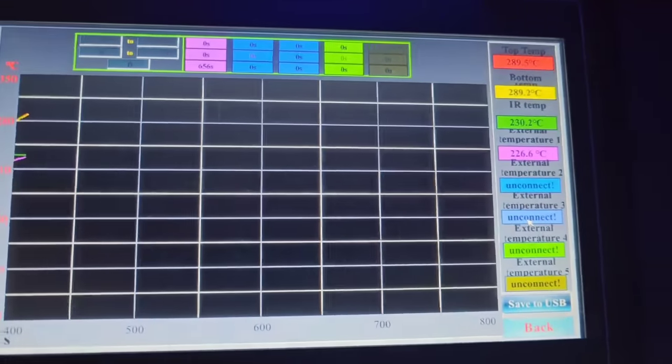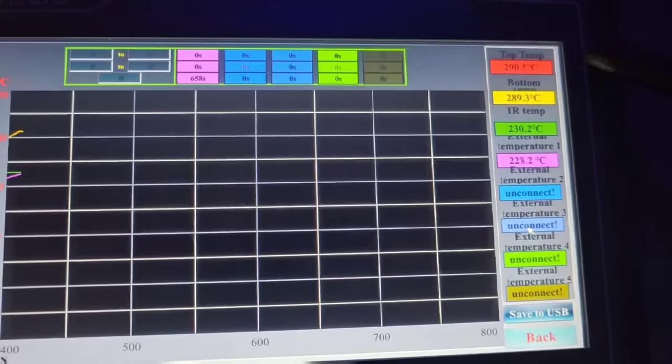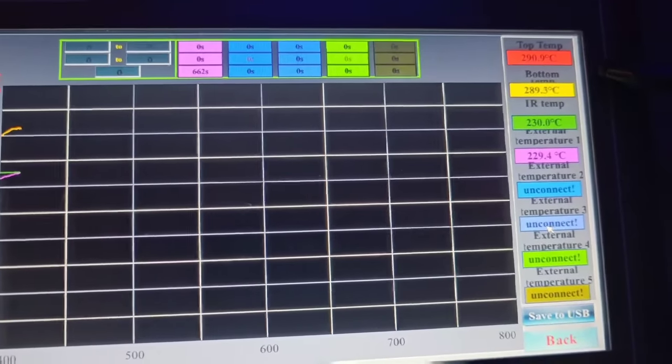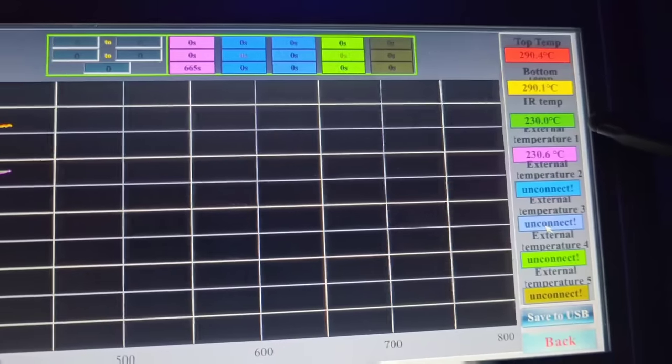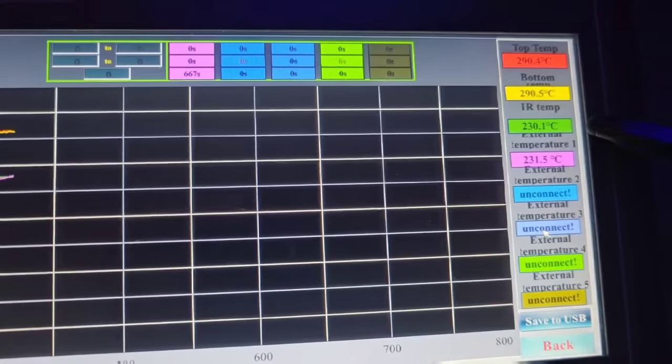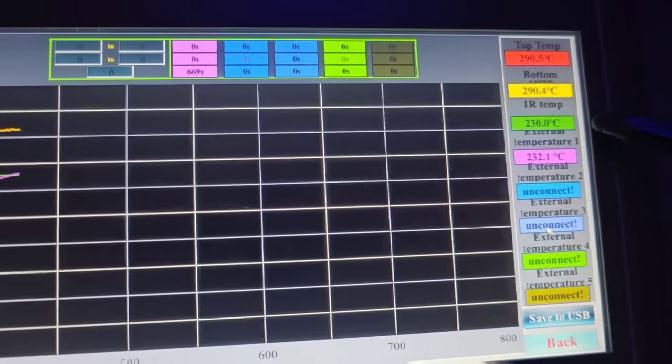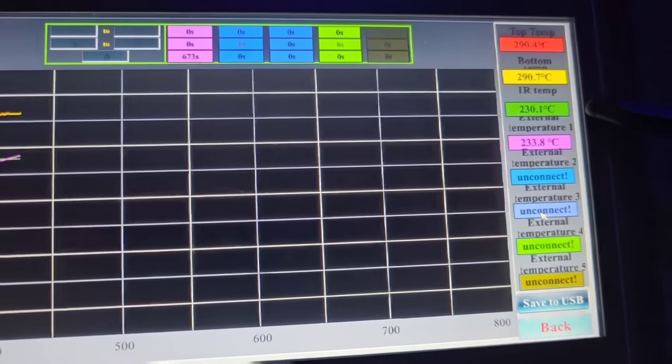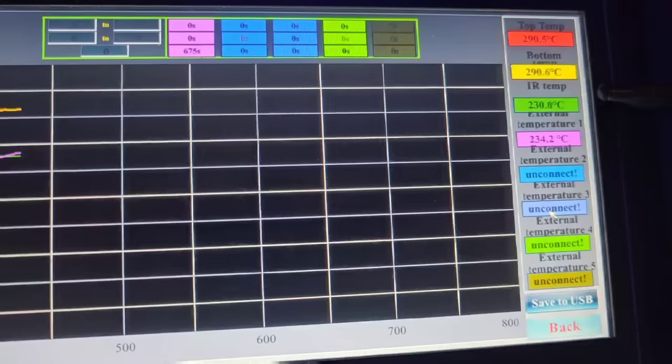So let's look at the temperatures that we have here. Our profile peak reflow temperature at the upper and lower heaters is set to 290. They both reach 290. Our thermocouple temperature at the edge of the BGA is 230. And that's typical, you're going to have around, depending on the density of the board, you're going to have the 230 to 250.